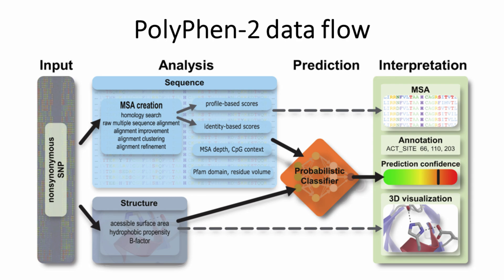PolyPhen-2 uses eight sequence-based and three structure-based predictive features, which were selected automatically by an iterative greedy algorithm. The majority of these features involve comparison of a property of the wild-type allele and the corresponding property of the mutant allele. Most informative features characterize how well the two human alleles fit into the pattern of amino acid replacements within the multiple sequence alignment of homologous proteins, how distant the protein harboring the first deviation from the human wild-type allele is from the human protein, and whether the mutant allele originated at a hypermutable site.